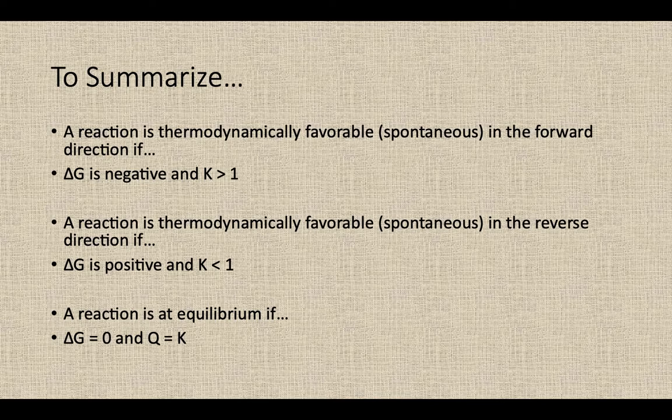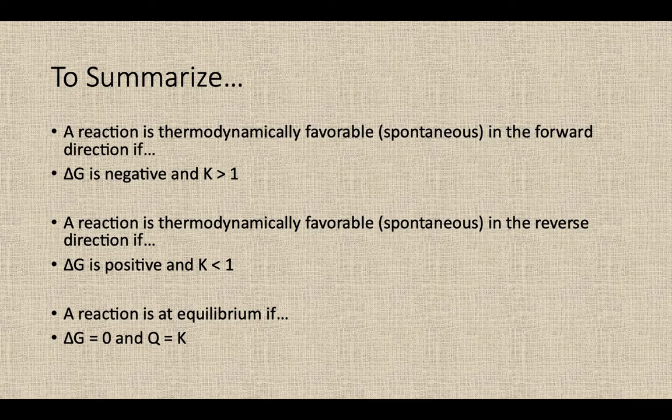So the big things that you do really need to focus on for our slightly modified coronavirus thermo-2 chapter is that when delta G is negative, your K is going to be greater than one. It's products favored in the forward direction, thermodynamically favorable forward. If your delta G is positive, thermodynamically favorable in the reverse direction. So K is less than one. And then if something's at equilibrium, your delta G value is going to be zero.